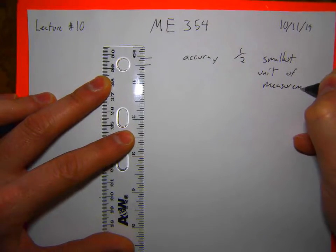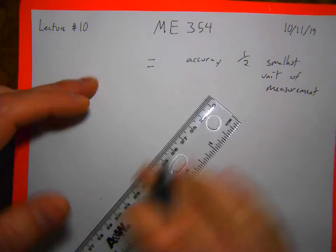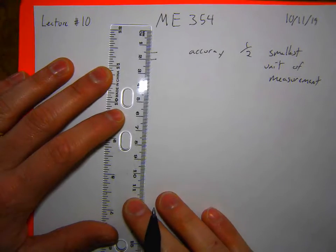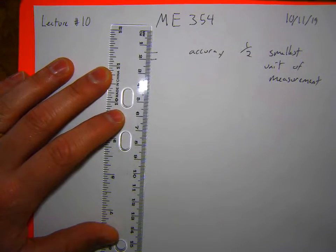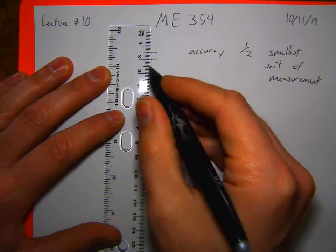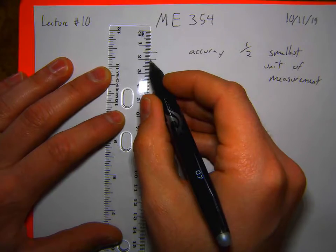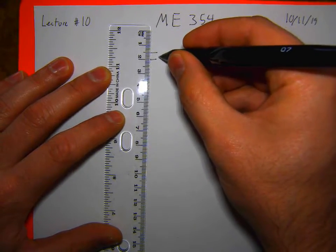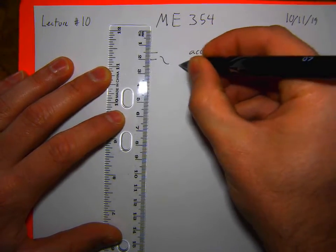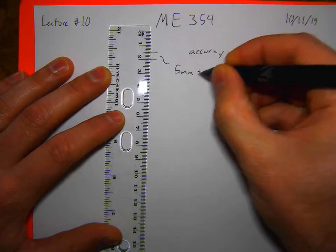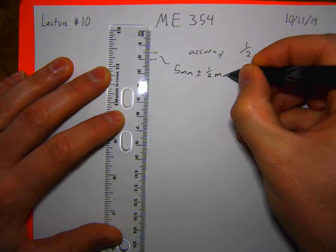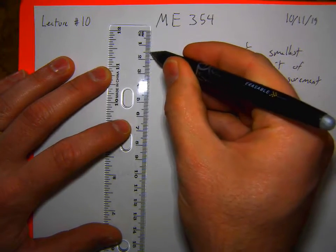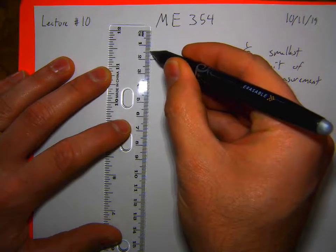So, here if I say this ruler is in millimeters, I can measure plus or minus half a millimeter. Because I can say these lines are apart by — that's actually pretty close to five. So say this is five millimeters plus or minus half a millimeter, because I can't actually resolve below that.